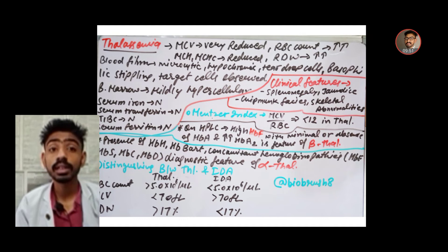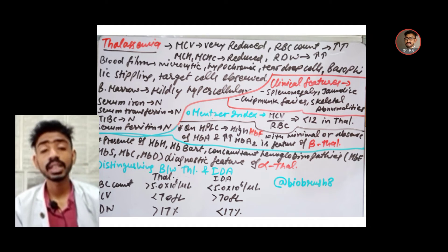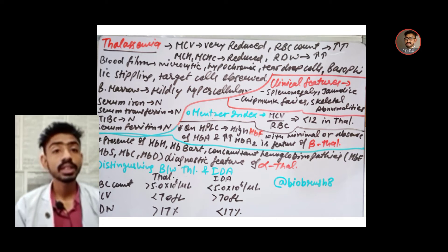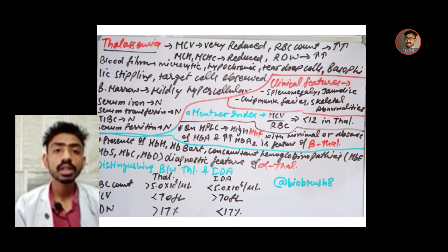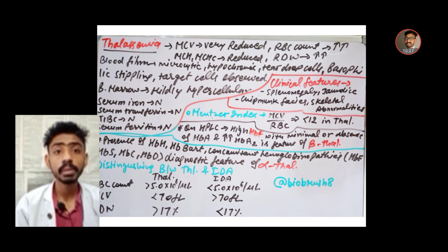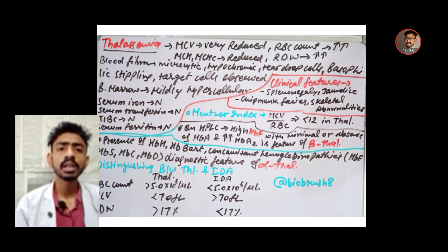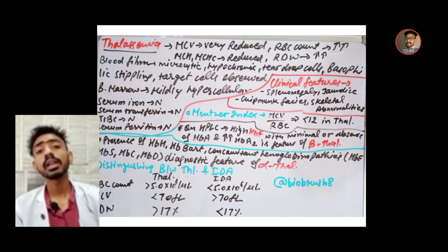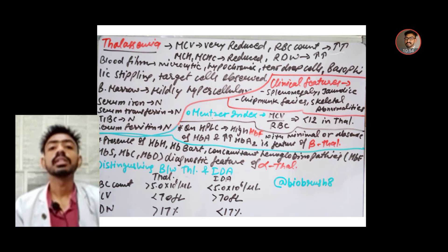Thalassemia is a disorder of defective globin chain synthesis. In thalassemia, MCV is very reduced, RBC count increases, MCHC and MCH are reduced, and RDW increases. The blood film may show microcytic hypochromic cells, teardrop cells, basophilic stippling, and target cells. Bone marrow may be mildly hypercellular. Importantly, serum iron, serum ferritin, and serum transferrin levels are all normal because there is no defect in iron metabolism — the defect is in the protein part, specifically the globin chain.